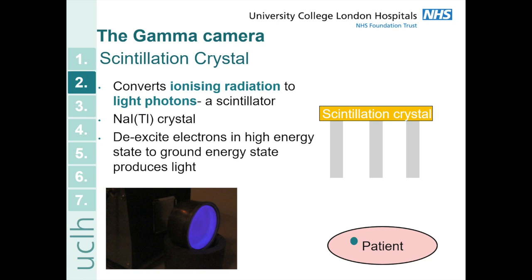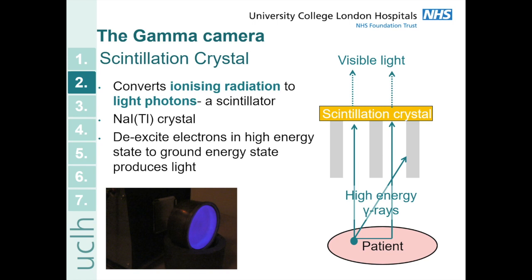The next part of the gamma camera is the scintillation crystal, which converts the incoming ionizing radiation into light photons. Generally in nuclear medicine we use a sodium iodide crystal doped with thallium. It works by de-exciting electrons in the scintillator from a high energy state to a ground energy state, which leads to the production of visible light. The important thing is that high energy gamma rays coming in from the patient are converted into visible light, which then goes into the next stage of the detector.